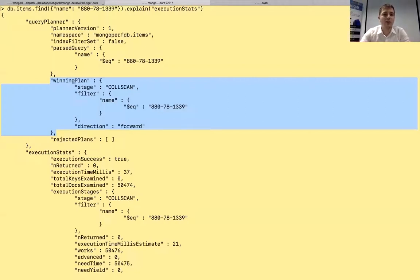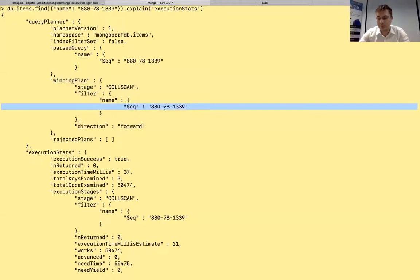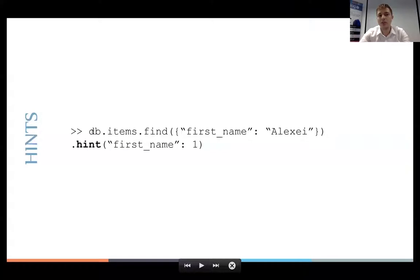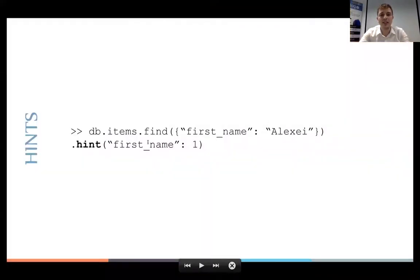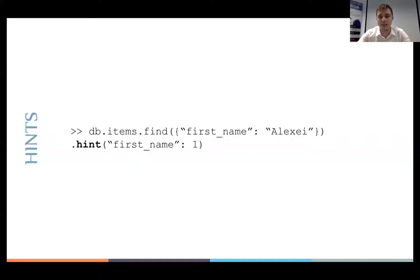Whether MongoDB selects a good index as the winning plan — great. But if MongoDB selects a suboptimal index due to its statistical model, you can always hint another index. For example: find on items collection with first name 'Alexei', and hint to use the first name index. This forces MongoDB to use a specific index rather than its winning plan. However, this is generally a failing strategy — you might win in one case but lose in most. MongoDB usually makes a better choice than developers expect.